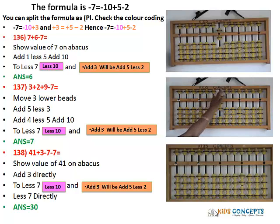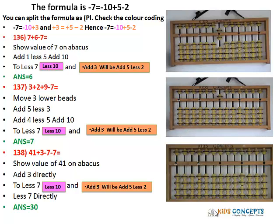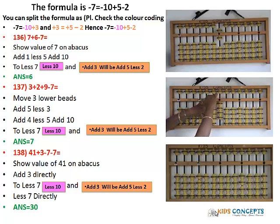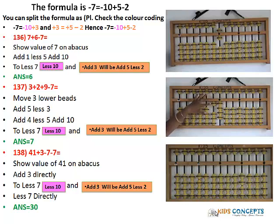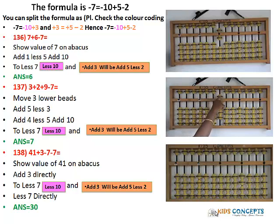Let's repeat this again. 3 add 2 — add 2 is add 5 less 3. Add 9: 9 is add 4, add 5, add 10. Less 7 is less 10 add 5 less 2. Answer is 7.